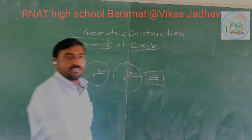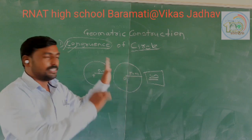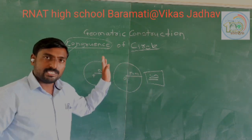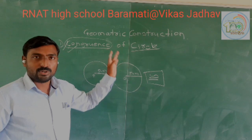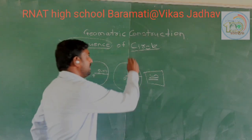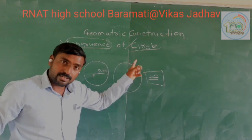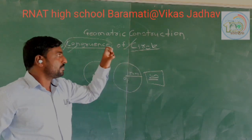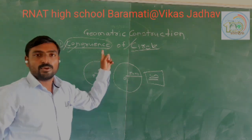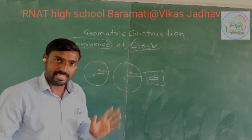These 3 parts are the overview: congruence of line segments, congruence of angles, and congruence of circles. When circles have equal radius, they are congruent. Thank you.